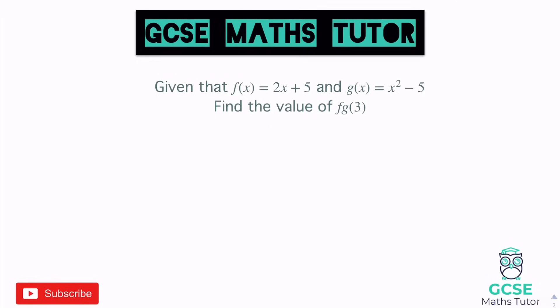Very similar question. Given that f(x) equals 2x plus 5, and g(x) equals x squared minus 5, find the value of fg(3). So the letters are the other way round this time. And that means what is f when g is 3? So the first thing I'm going to have to work out is subbing 3 into g, otherwise I'm not going to be able to put the answer into f.